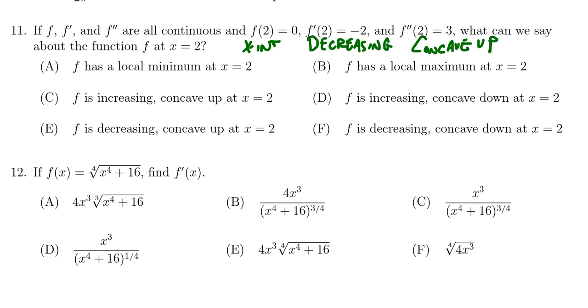So we're actually going to select choice E right here, because the function's decreasing and concave up at 2. These other statements, we know that the function's not increasing, so it can't be choices c and d. We know that the function's concave up, so it couldn't be choice f or d.